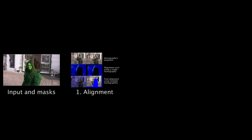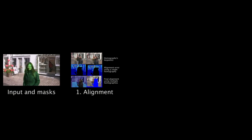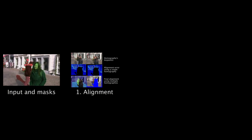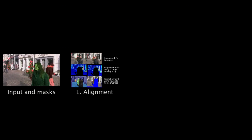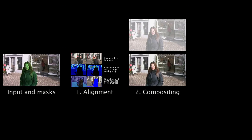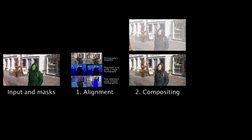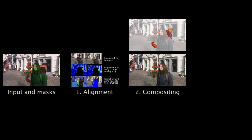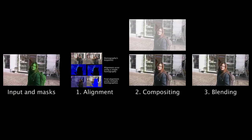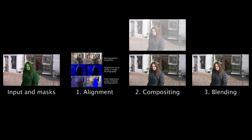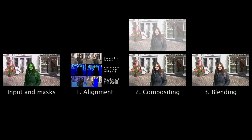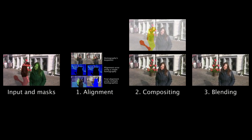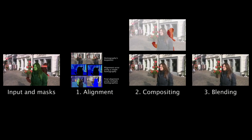To remove objects, we first align frames to each other, and then compute a composite of these aligned frames such that we can replace the object to be removed with background. In a post-processing step, we perform gradient domain fusion to remove illumination differences.